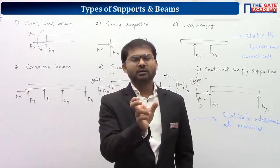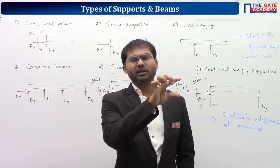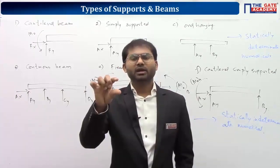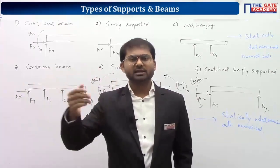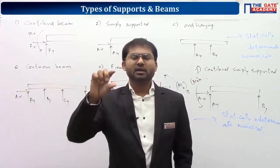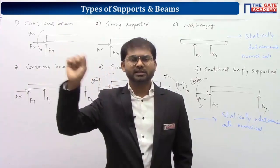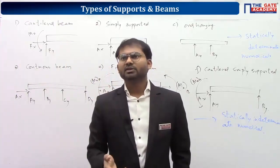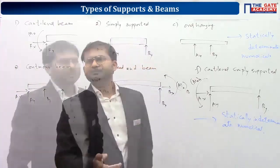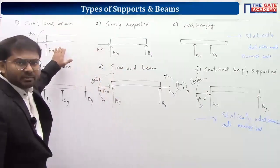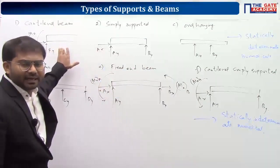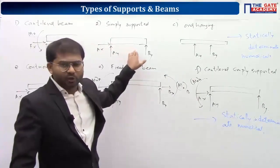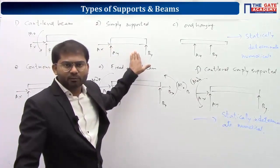In a uniformly distributed load, the intensity is constant — it is not changing. In a varying distributed load, the intensity increases in a linear way along the length. A cantilever beam has one fixed support; a simply supported beam has one hinge and one roller support.